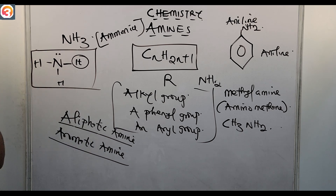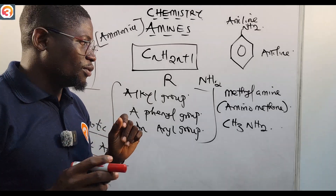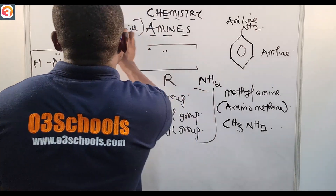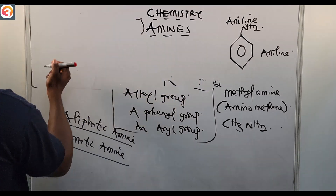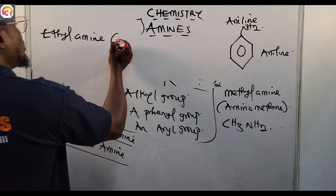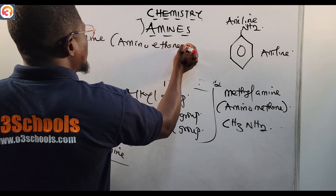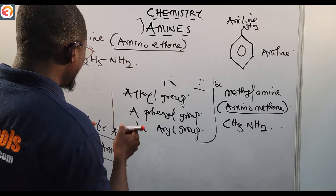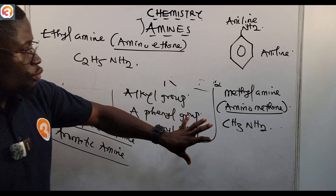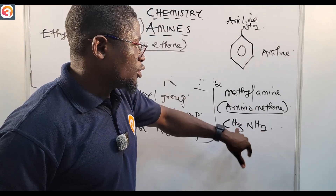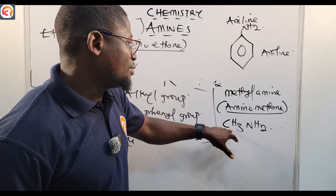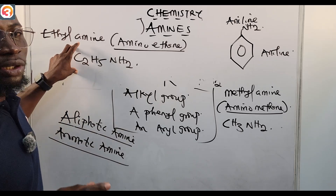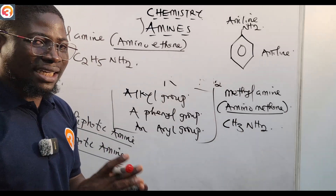The simplest member of the amines is methylamine (CH₃NH₂). The next member is ethylamine, also called aminoethane (C₂H₅NH₂). In ethylamine, one hydrogen atom in ammonia has been replaced by an ethyl group. Both methylamine and ethylamine are gases.